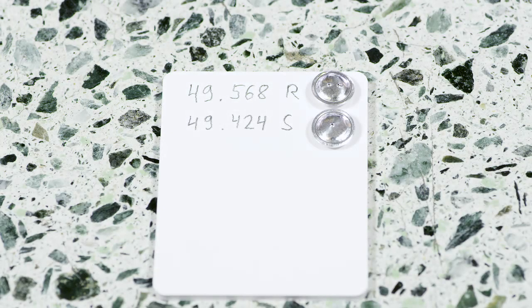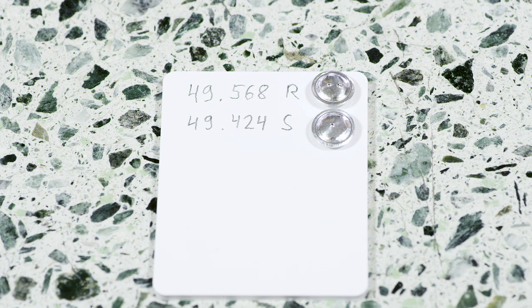The DSC calibration measurements are carried out with a reference and a sample crucible, each with a pierced lid. In order to achieve good measurement results, the crucible-lid combinations weight on the sample and reference side should not differ by more than 0.2 milligrams.